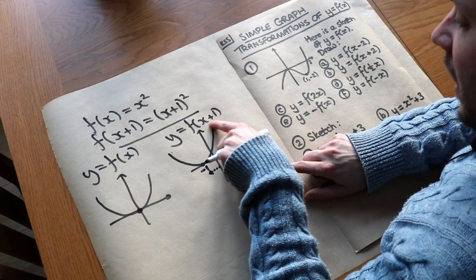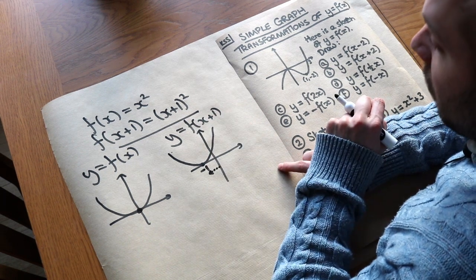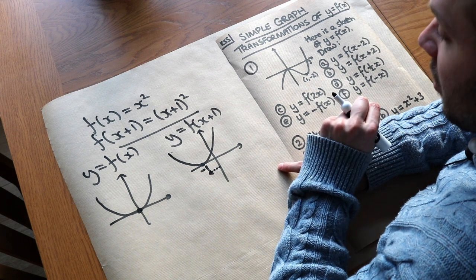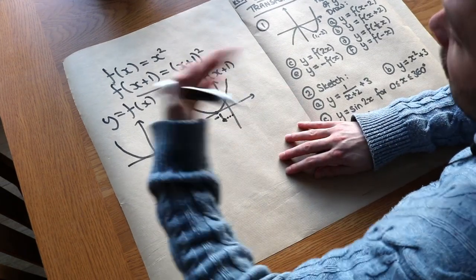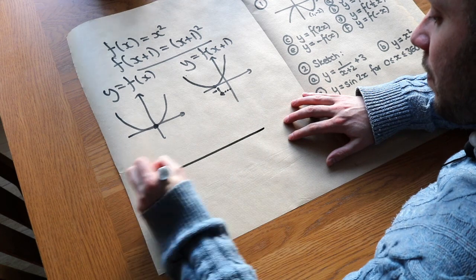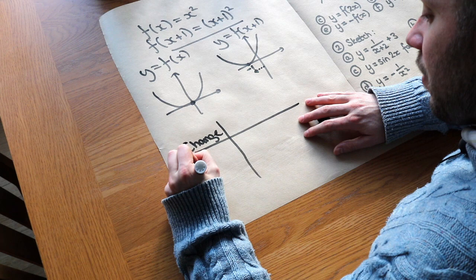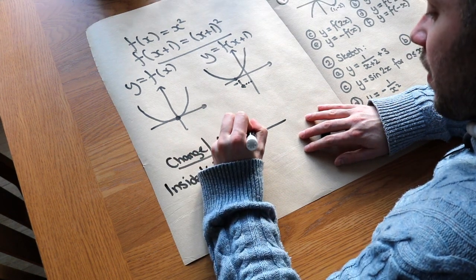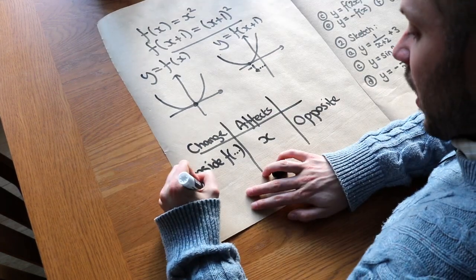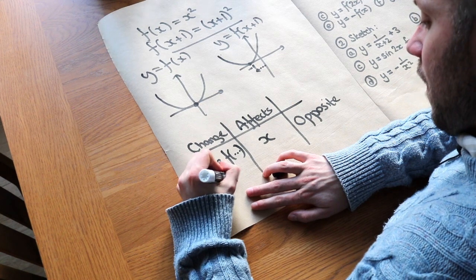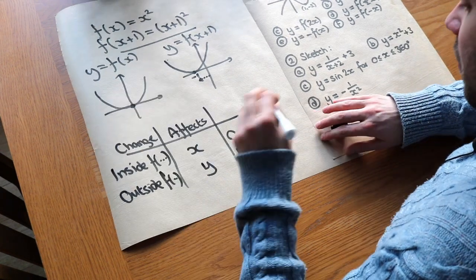So it seems that when we change the input of this function notation — when we change x to x plus 1 — the result was to translate the graph 1 to the left. We can summarise how we affect the graph for different variants of y equals f of something. If the change is inside the function, it affects the x-axis and does the opposite of what you expect. If the change is outside the function, it affects the y-axis and does what you expect. This will become clear when I do a few examples.